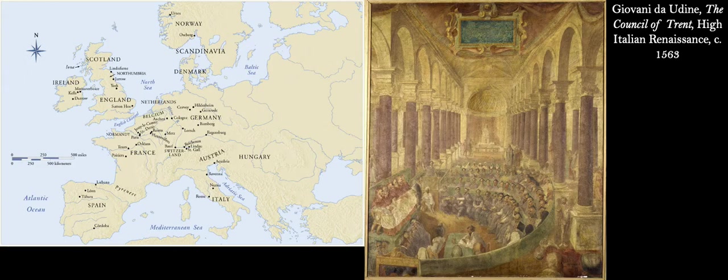Beginning in the 1550s and continuing through the 1560s, the Catholic Church convened what's called the Council of Trent — such important words I'll say it again. The Council of Trent was the meeting of the leadership of the Roman Church in Trento, in Northern Italy, as a way of bringing the faithful back to the Catholic faith. And one of the ways they wanted to do so was through the use of art — or, you could frame it differently and say propaganda.